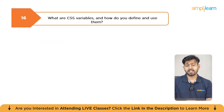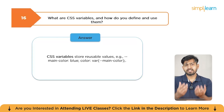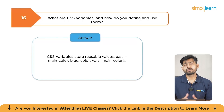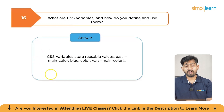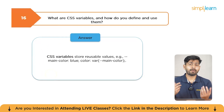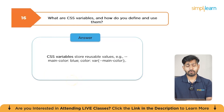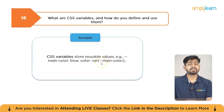What are CSS variables and how do you define or use them? CSS variables are used to store values. For example, you can create a variable like --main-color: blue and use it throughout your CSS. You reference it with color: var(--main-color), which will apply the color as blue everywhere it's used.